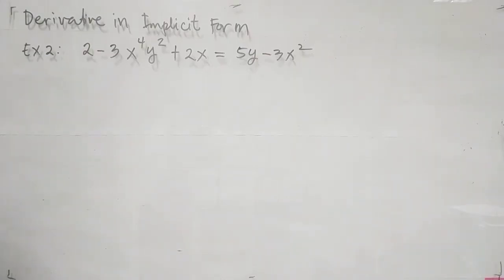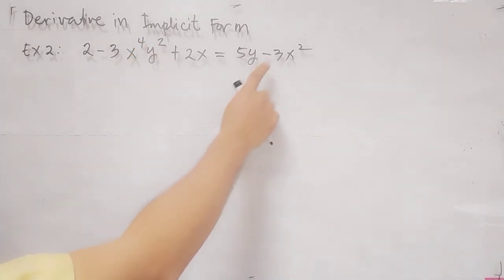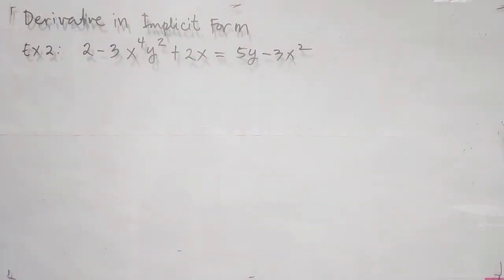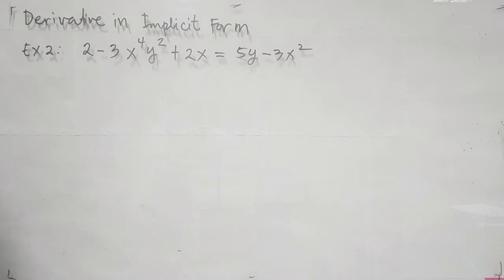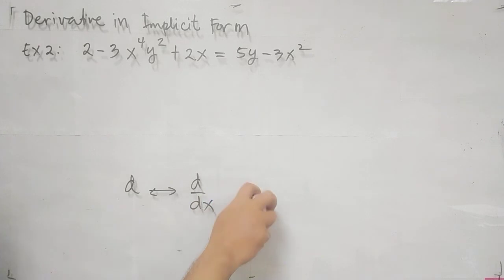Another example — example 2. Our equation is 2 minus 3x to the 4th y squared plus 2x equals 5y minus 3x squared. This is in implicit form, and we will take the derivative. In my case, I usually use the first process — using d instead of d over dx. You have an option depending on which is more preferable; I will be using d.